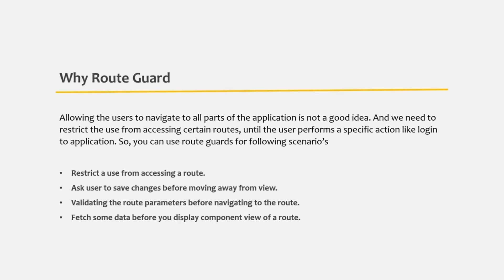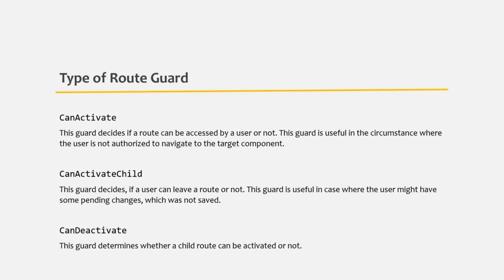Now in Angular, we have 5 route guards. First of all, we have the CanActivate route guard and CanActivateChild route guard. The CanActivate and CanActivateChild route guards are used to allow or restrict a user from navigating to a route. The most common use case is when we want to protect a route from unauthorized access.